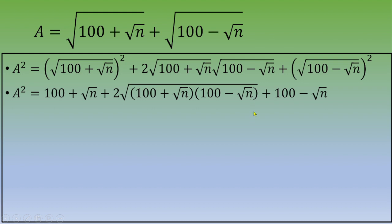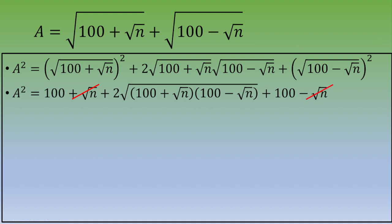We now use the difference of squares identity: (a + b)(a − b) = a² − b². The +√n and −√n cancel, giving us (100)² − (√n)² = 10,000 − n. So the expression becomes a² = 100 + 100 + 2·√(10,000 − n), which is 200 + 2√(10,000 − n).